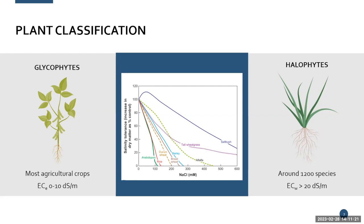Here's a chart with biomass on the y-axis and increasing salinity on the x-axis. Durum, bread wheat, and barley all decrease rapidly in biomass as soon as any salinity is introduced — they are glycophytes with little stress tolerance. However, the blue line represents saltbush, a halophyte. Saltbush actually increased in biomass slightly with some increasing salts, and is able to tolerate high salinities and still fulfill its life cycle.